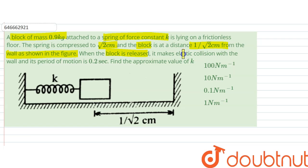When the block is released, it makes plastic collision with the wall and its period of motion is 0.2 seconds. Find the approximate value of k.